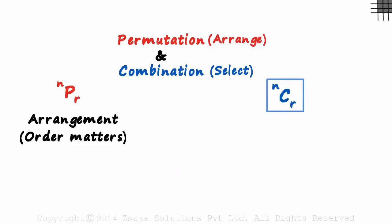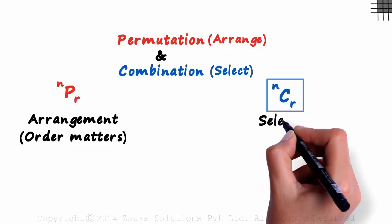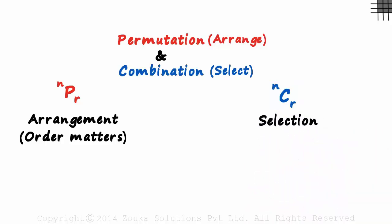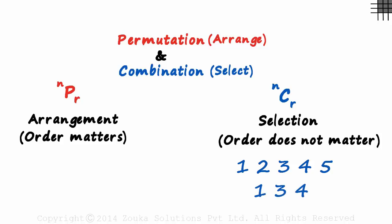And what about combination? Combination is selection. Selection is simply picking a few things. Here the order does not matter. Say from the digits 1, 2, 3, 4, 5, we picked up 1, 3 and 4. Picking up 1, 3, 4 is the same as picking up 4, 1, 3. They are not two different cases.